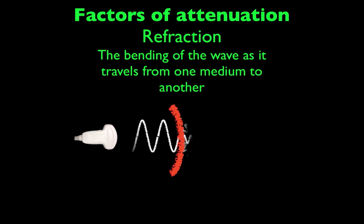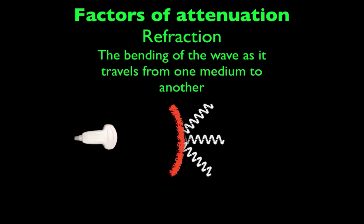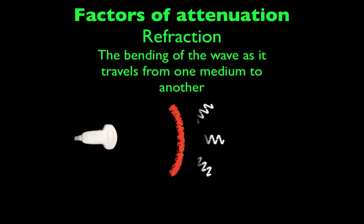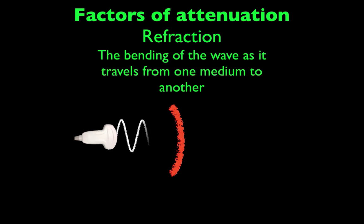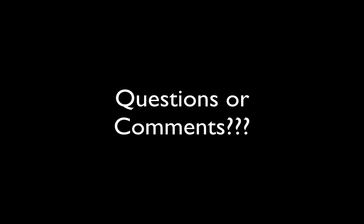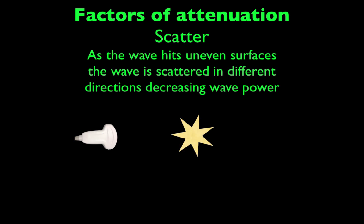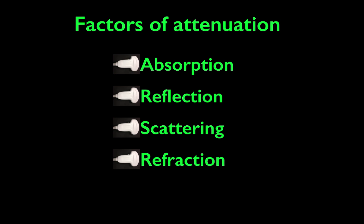Refraction is similar to scatter in that we hit uneven surfaces, but these uneven surfaces bend the ultrasound waves. These are usually curved-type encounters where this occurs, and the wave gets refracted into different directions so it can't return to the ultrasound probe, thus decreasing the power and intensity of the ultrasound wave. So remember, those are our four factors of attenuation and how they affect the ultrasound wave.